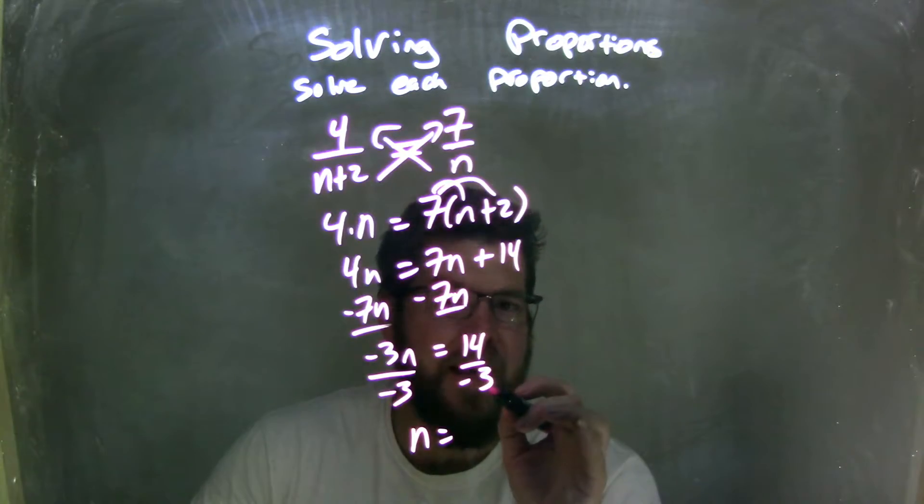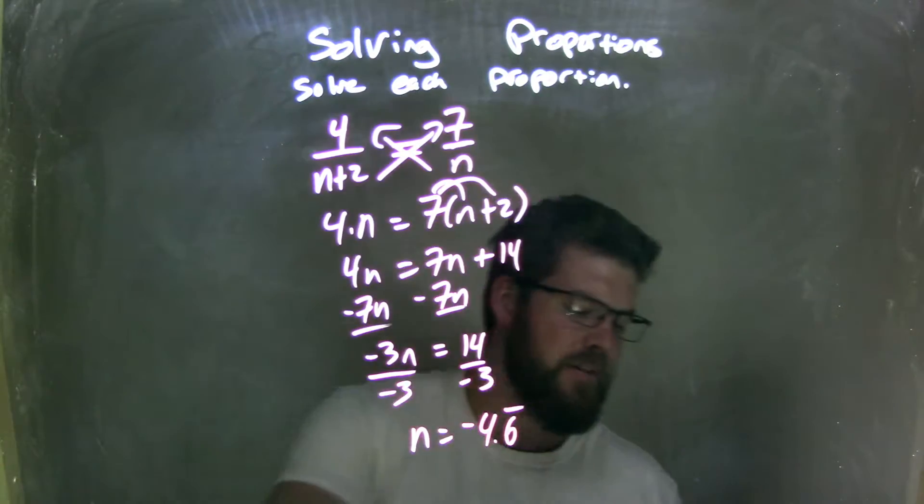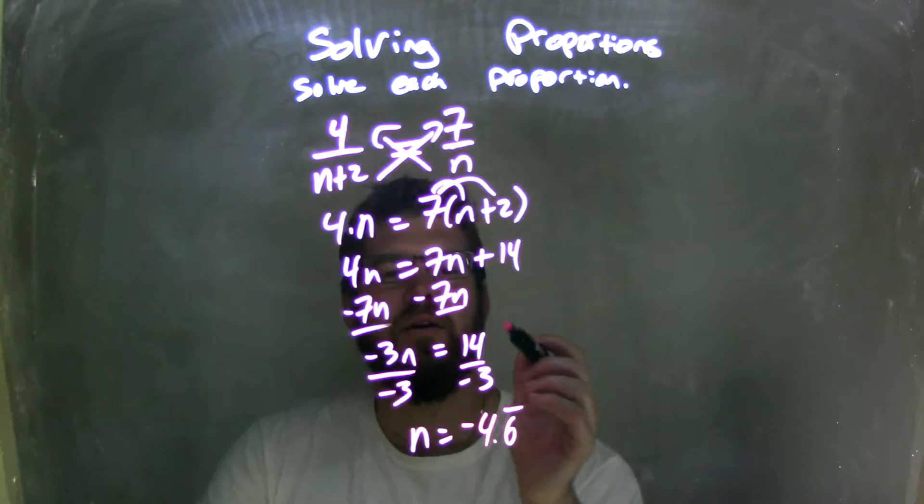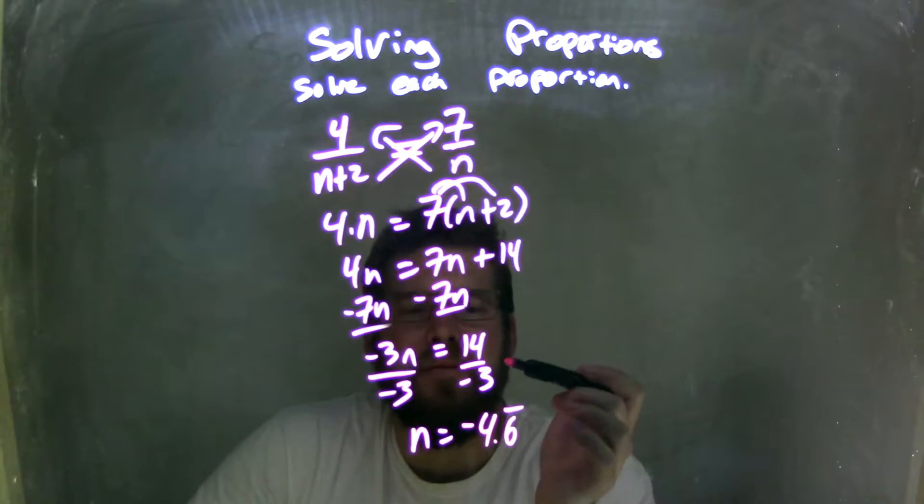Positive divided by negative is a negative. So I have negative 4.6 repeating. I'm going to keep it exact. I'm not rounding here. So 14 divided by negative 3 is really 4 and 2 thirds, and that comes out to be negative 4.6 repeating.